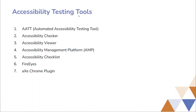Next we'll talk about what tools are available by which we can do accessibility testing. There are seven examples of tools: automated accessibility testing tools, accessibility testing checker, accessibility viewer, accessibility management platform, accessibility checklist, and the FireEye AXE Chrome plugin.